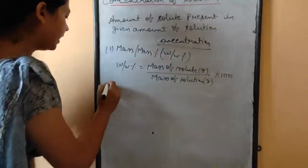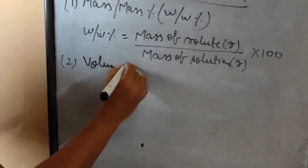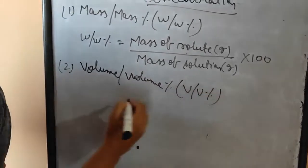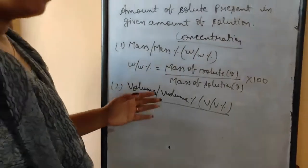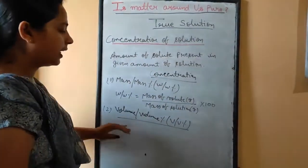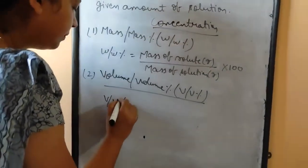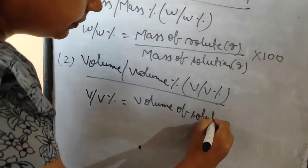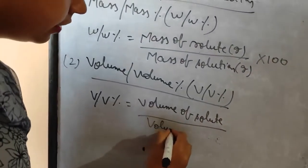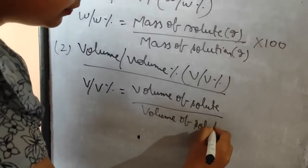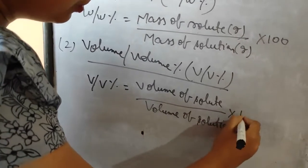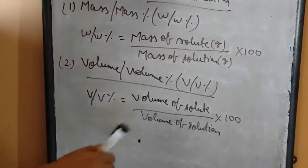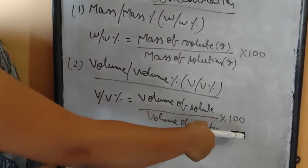The second method is volume by volume percent, written as V by V percent. If volume is given in the question, apply this formula. The formula is: volume of solute divided by volume of solution, into 100.